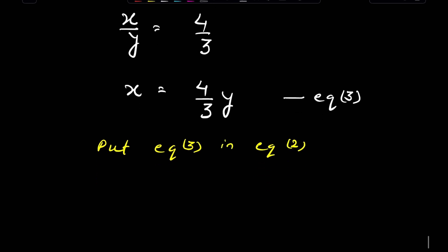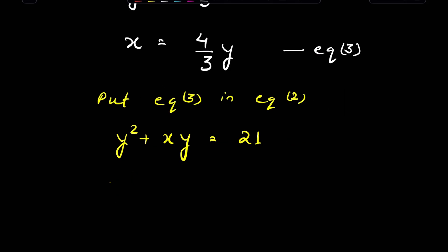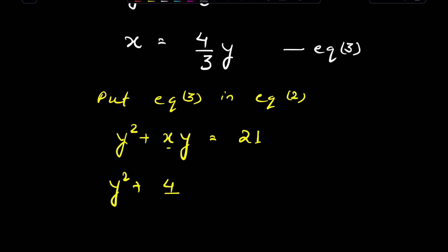Equation 2 is y squared plus xy is equal to 21, or y squared plus the value of x, which is (4/3)y, times y is equal to 21.